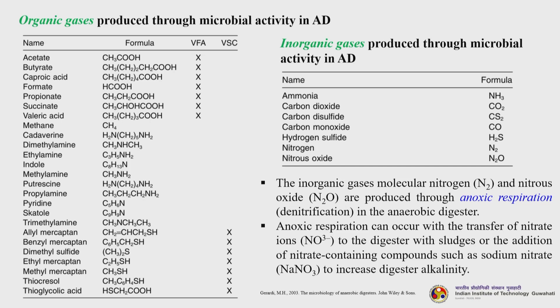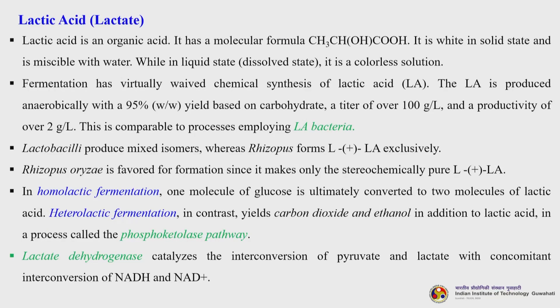Anoxic respiration can occur with the transfer of nitrate ions to the digester with sludges, or by the addition of nitrate-containing compounds such as sodium nitrate to increase the digester alkalinity. The next product is lactic acid. Lactic acid is an organic acid with molecular formula CH₃CHOHCOOH. It is white in solid state and miscible with water, while in liquid state it is a colourless solution. Fermentation has virtually displaced chemical synthesis of lactic acid. It is produced anaerobically with a 95% (w/w) yield based on carbohydrate, a titer of over 100 grams per litre, and a productivity of over 2 grams per litre per hour.